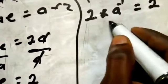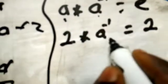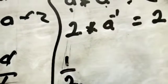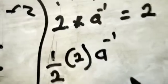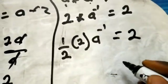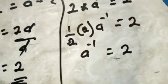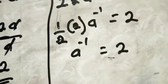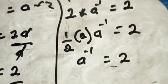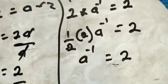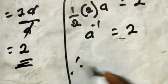Applying the operation definition: (1/2) × 2 × a⁻¹ = 2. The 2 in the numerator and denominator cancel, giving a⁻¹ = 2. So the inverse of 2 is 2. That is how you solve for the inverse element under this binary operation.